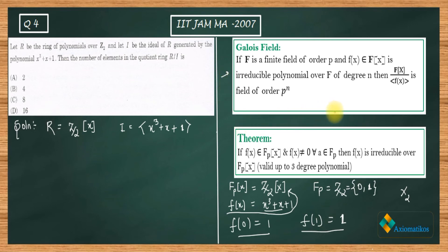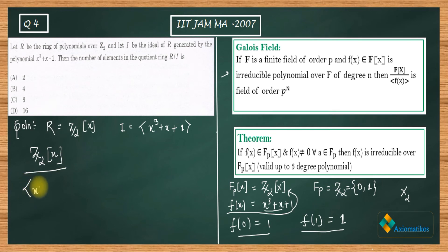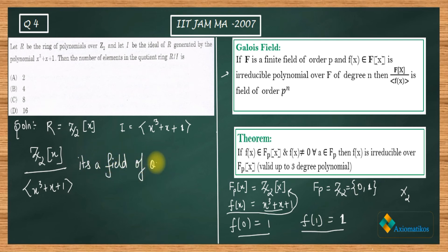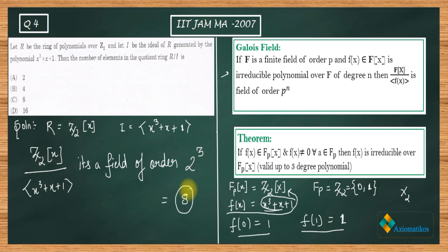Now applying the Galois field result: Z₂ is a finite field, and x³+x+1 is irreducible. Therefore the quotient ring Z₂[x]/⟨x³+x+1⟩ is not just a ring — it's a field of order p^n. Here p = 2 (the order of Z₂) and n = 3 (the degree of the polynomial). So the order is 2³ = 8.